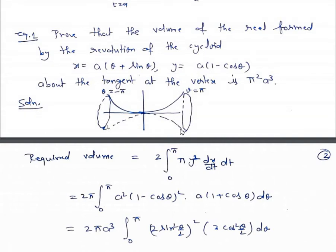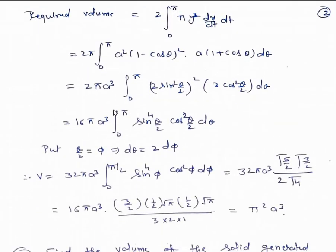At this point θ = −π, and here θ = 0. So the required volume is 2∫[0 to π] π y²(dx/dt) dt, which is 2π∫[0 to π] a²(1 − cos θ)² · a(1 + cos θ) dθ.